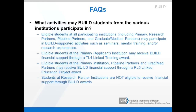What activities may BUILD students from the various institutions participate in? Eligible students at all participating institutions — including primary, research partners, pipeline partners, and graduate medical partners — may participate in BUILD financial support through the RL5-linked education program. Eligible students at the primary institution, pipeline partners, and graduate medical partners may receive BUILD financial support through the RL5-linked education program. Students at research partner institutions are not eligible to receive financial support through BUILD awards.